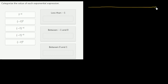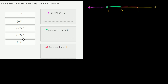The important things to consider on the number line are 0, 1, and negative 1. The first category, less than negative 1, covers all values to the left of negative 1. Between negative 1 and 0 is the next category. And between 0 and 1 is the final category. They didn't give us a bucket for greater than 1, so it's safe to assume none of these will be greater than 1. Let's go expression by expression.